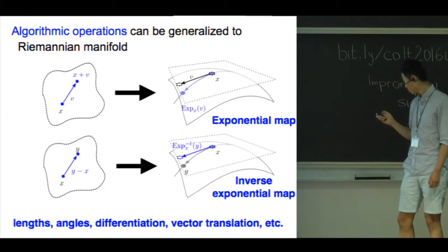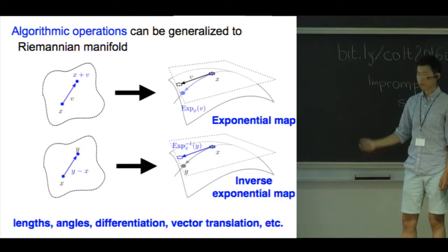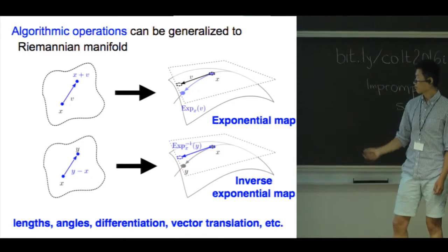The inverse exponential map, if it exists, corresponds to vector subtraction, y minus x.